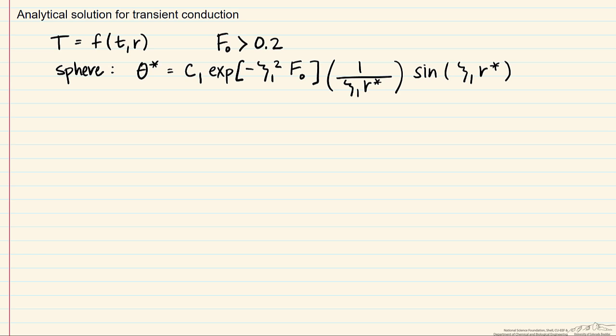Let's define some of these terms. The most important one is this theta star, which is a dimensionless temperature, and this is T minus T infinity, if you remember that's the temperature of the bulk, divided by Ti, which is the initial temperature of the solid, minus again, this T infinity.